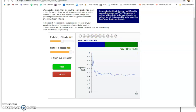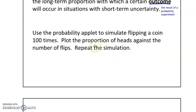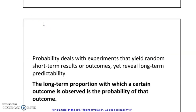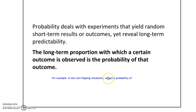They're both pretty close to one half, and there's a reason for that. If you were to do that not 100 times but 1,000 times, you would probably get something pretty close to 0.5. Probability in the experimental or empirical way deals with experiments that deal with random short-term results or outcomes, like those coin flips. Over time, the long-term proportion with which a certain outcome is observed is the probability of that outcome.